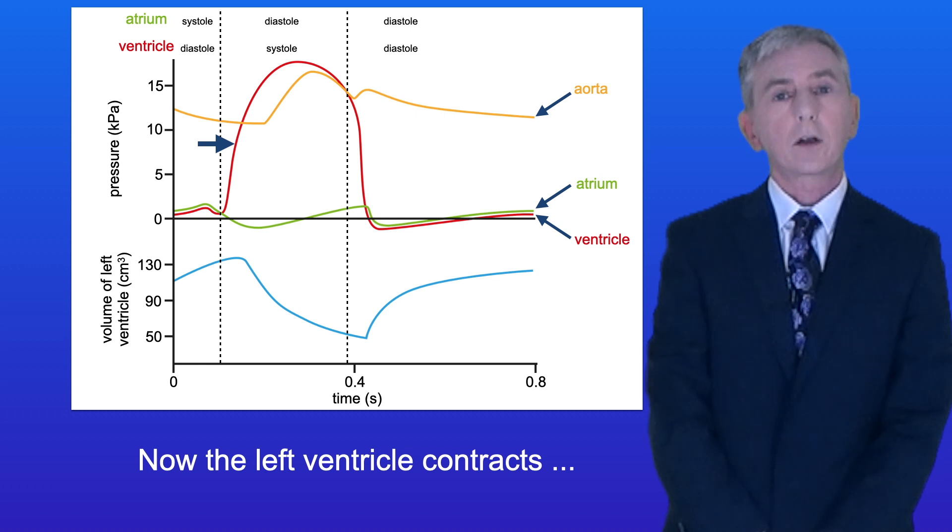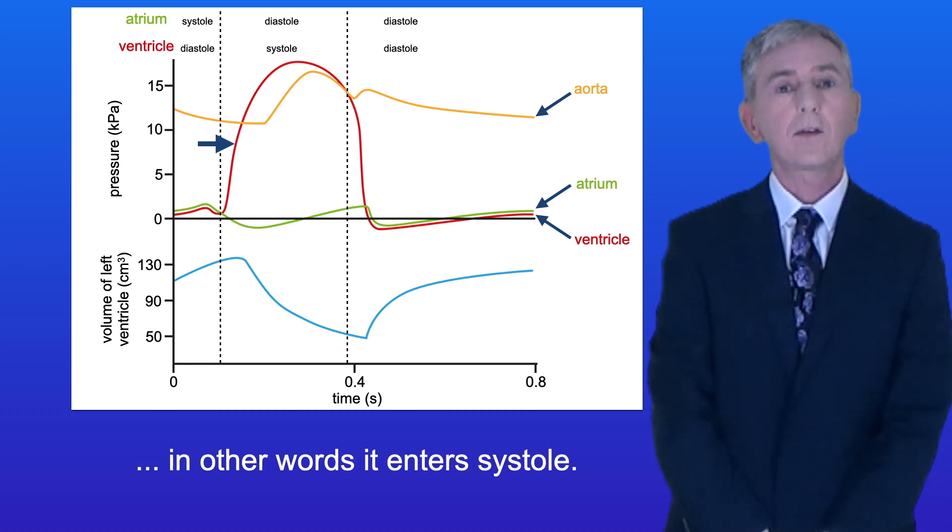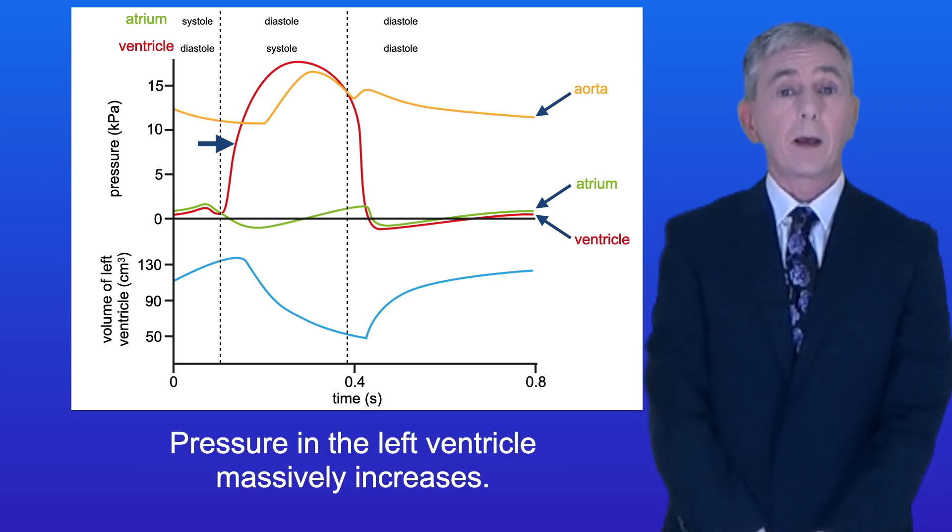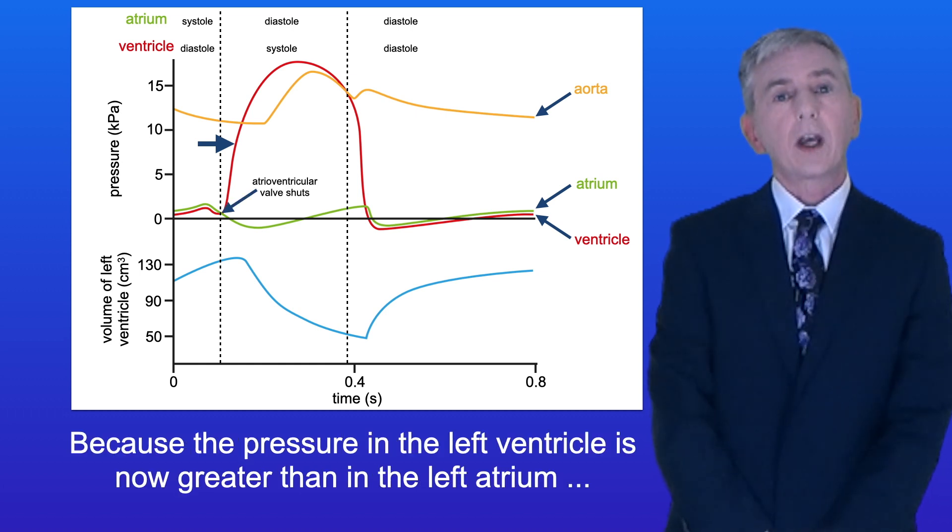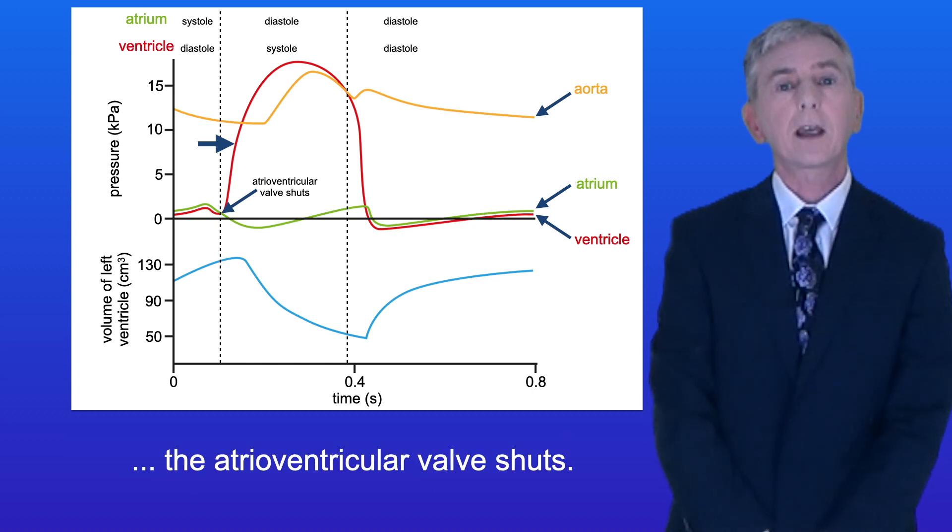Now the left ventricle contracts, in other words it enters systole. Pressure in the left ventricle massively increases. Because the pressure in the left ventricle is now greater than in the left atrium, the atrioventricular valve shuts.